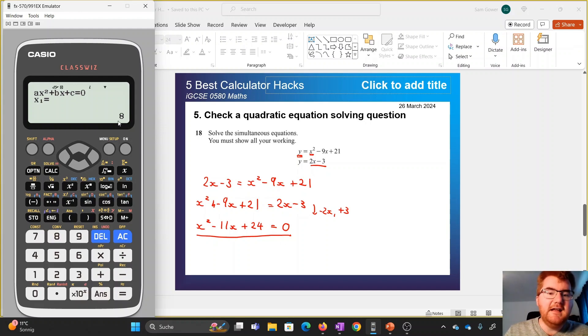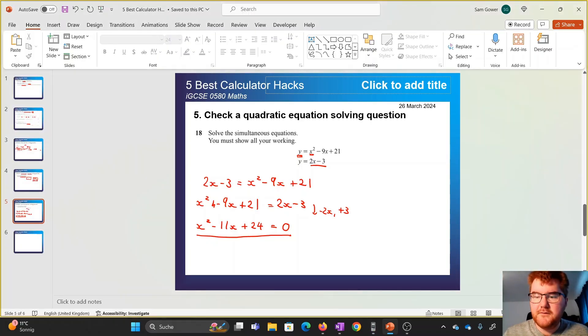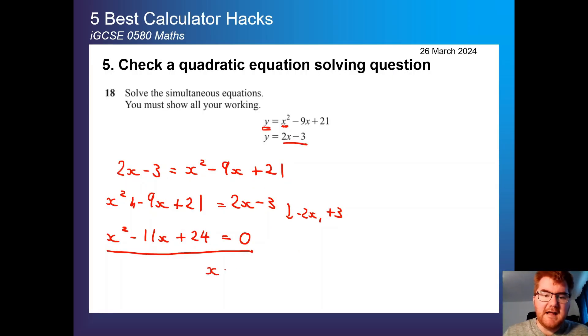And it gives me the two answers here. So x1, the first answer, is equal to 8, and the second answer is equal to 3. So I then know x is 8 and x is 3. Again, double, double warning here. Again, this is for checking your answer. You need to show your working for these questions to get all the marks. But again, a great feeling that I definitely have the right answer before I move on to working out the y values here.